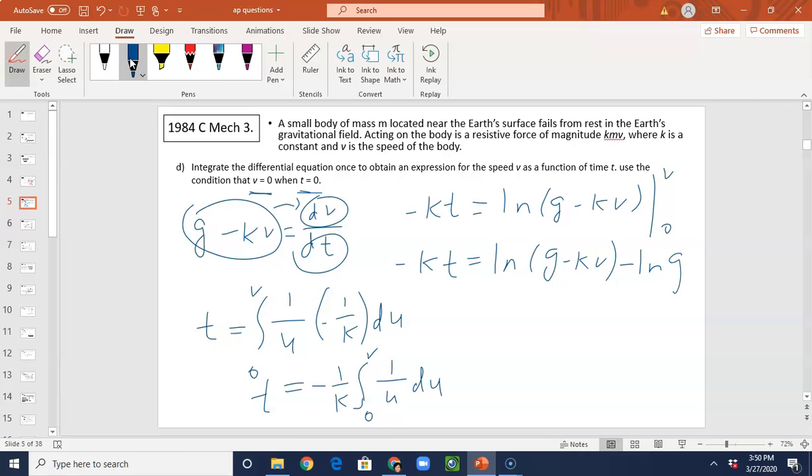Because when V equals to zero, the second part becomes zero. For the subtraction of log, you will have LN G minus KV over G. You just simply divide it. And that equals to negative KT. I'm just moving the KT to that side right here.